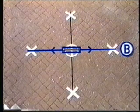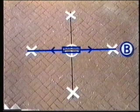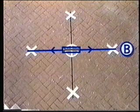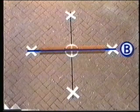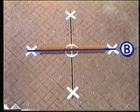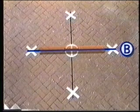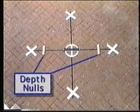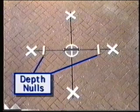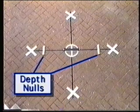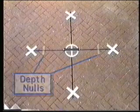Line B always will align with the direction of the transmitter. Since the direction of the transmitter will often match the direction of the sewer line that contains it, line B will almost always align with the direction of the underground sewer line as well. The transmitter also creates another pair of reference nulls, called depth nulls. As their name implies, these nulls allow for depth measurement. We will discuss depth measurement later.